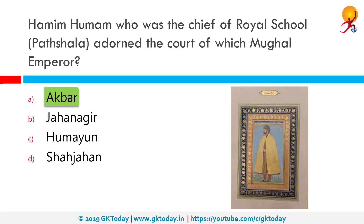Navratnas was a term applied to a group of nine extraordinary people in an emperor's court in India. The well-known Navratnas include those in the courts of the legendary emperor Vikramaditya, the Mughal Emperor Akbar, and the feudal lord Raja Krishnachandra.